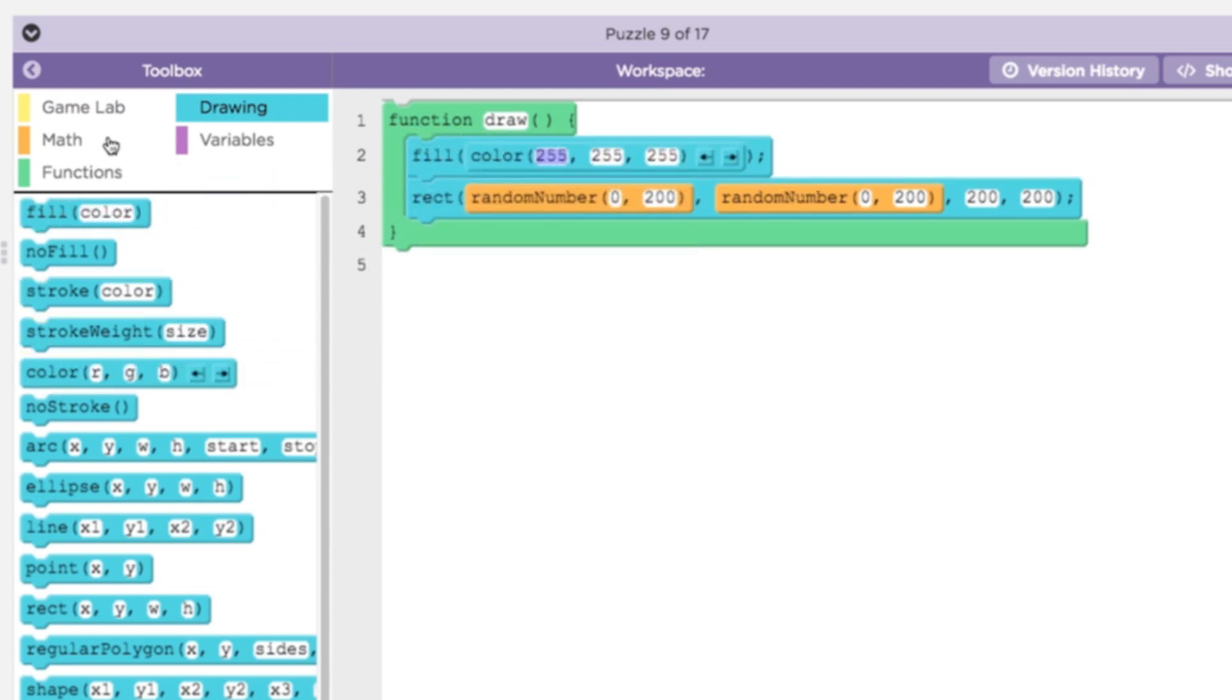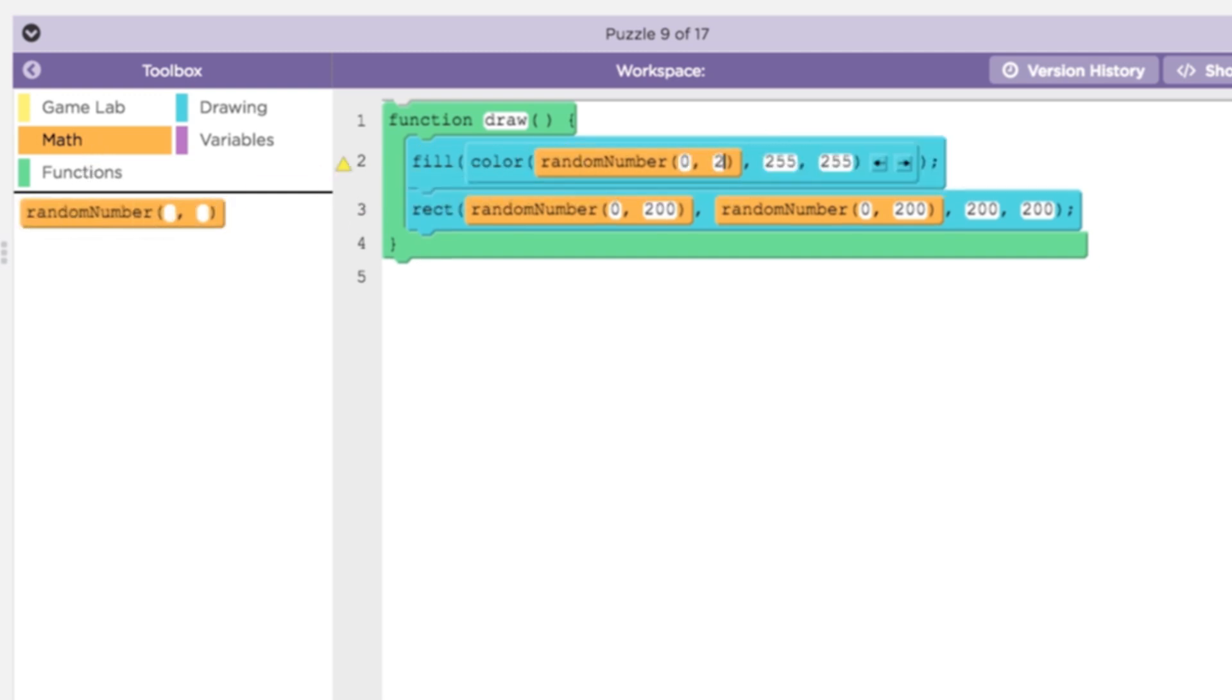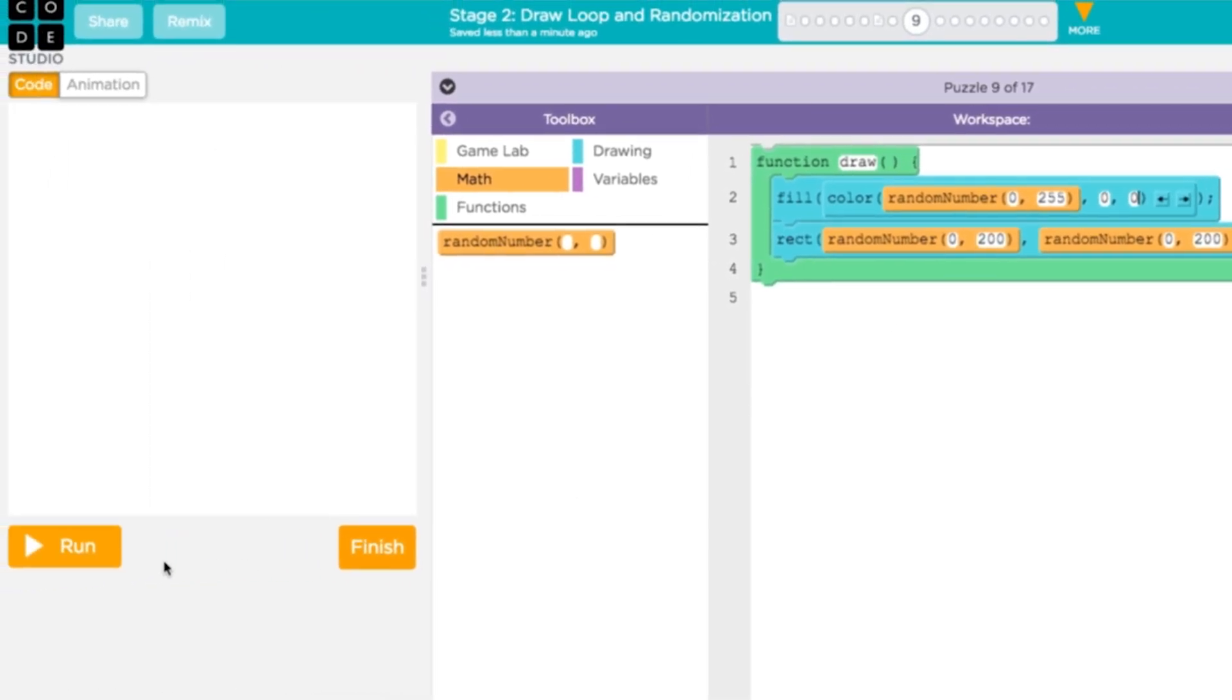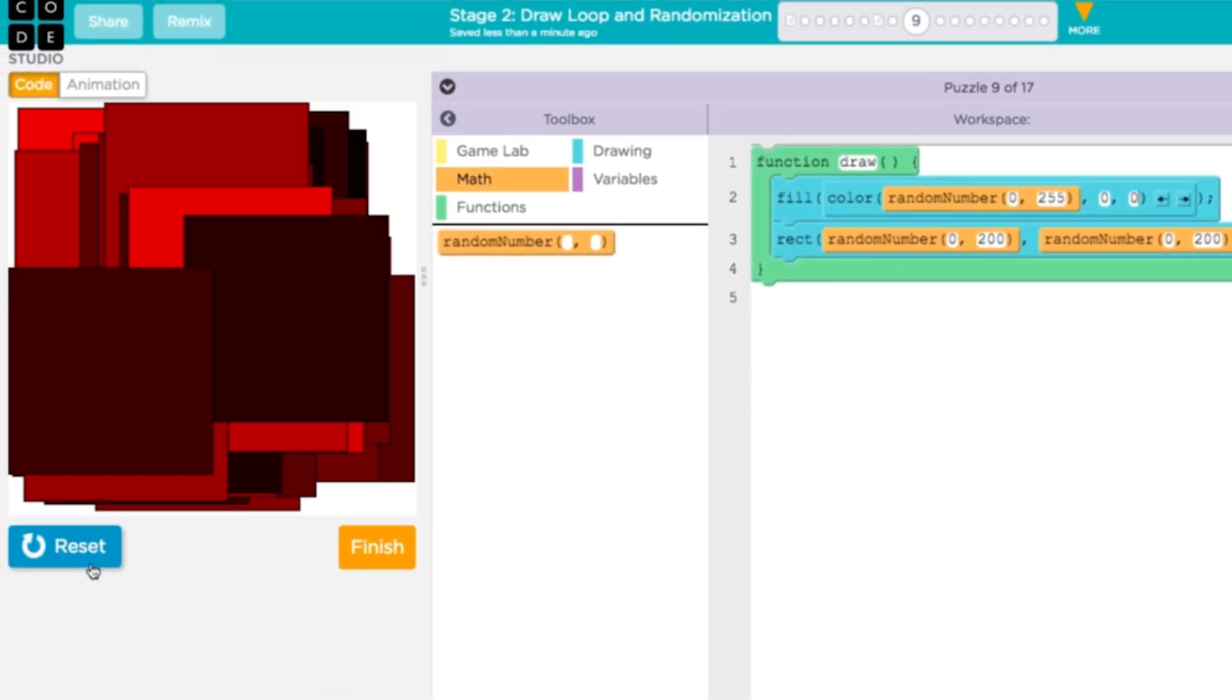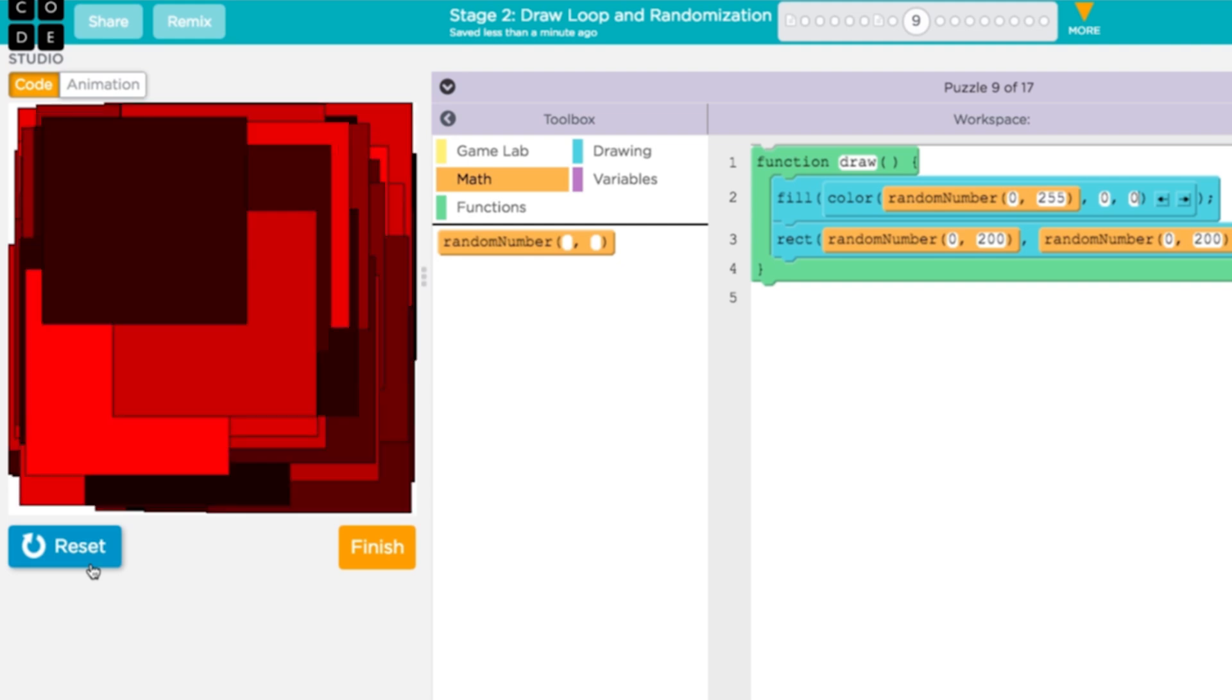Instead of always choosing the same color, we'll randomize by replacing the red value with the random number command. So in every frame of the flipbook, the computer is picking a new shade of red and setting that as the fill color. Then it picks a new X and Y value and draws a rectangle with those values.